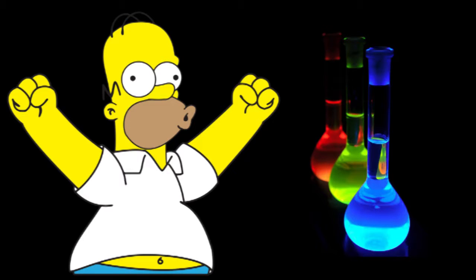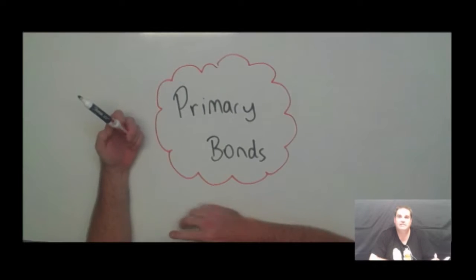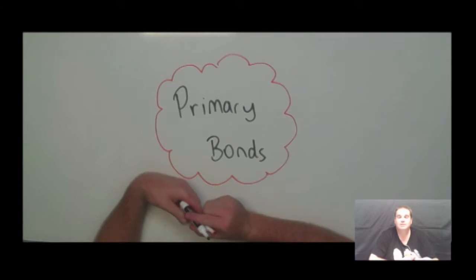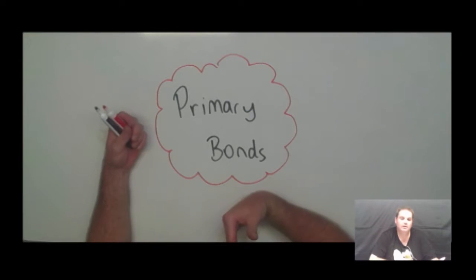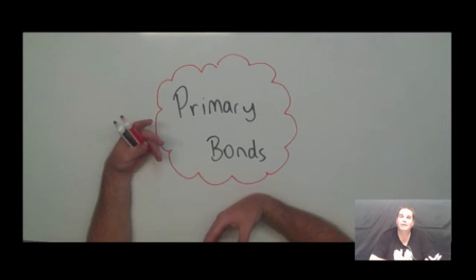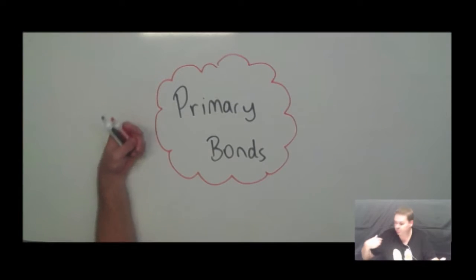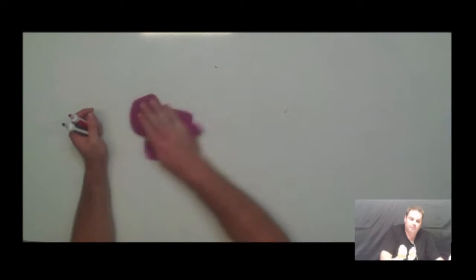Welcome to this next video. This one's going to be all about primary bonds. This is normally something that gets covered in year 11, so this is going to be a quick recap. I'm going to be explaining just the three different types of primary bonds and what impact that has upon their structure and some of their physical properties. The first type of primary bond we're going to look at is metallic bonds.